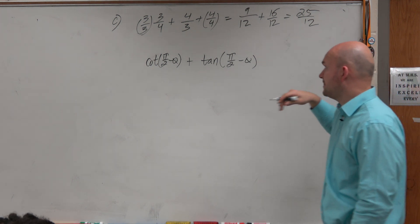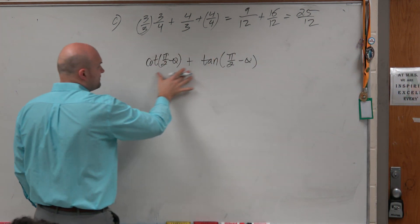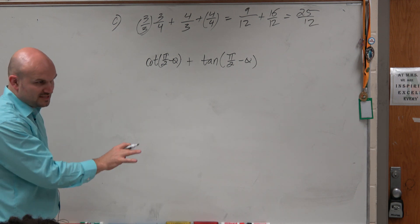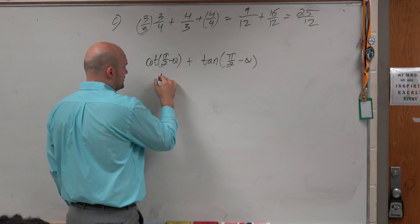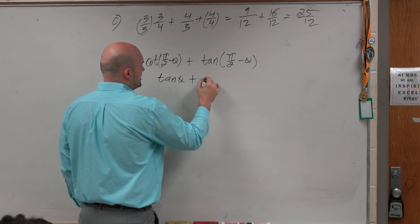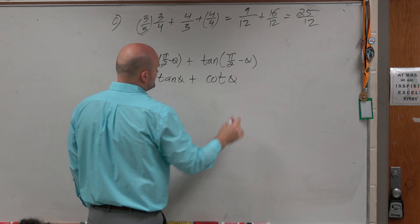Right? OK. So if I can't combine, now first of all, I see these co-function identities. So I'm going to convert this to tangent of theta plus cotangent of theta.